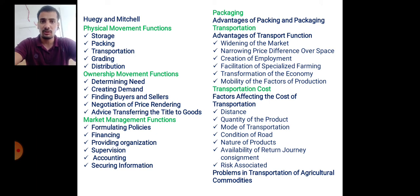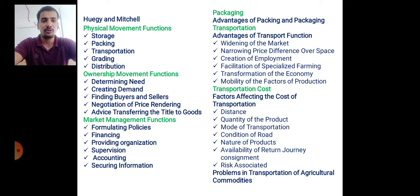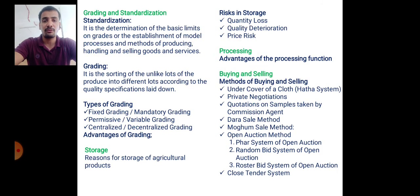Other factors affecting transportation cost include: quantity of the product, mode of transportation, condition of roads, nature of products, availability of return journey consignment, and risk associated with transportation. A problem in transportation of agricultural commodities is their bulky nature.